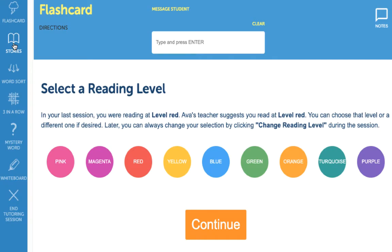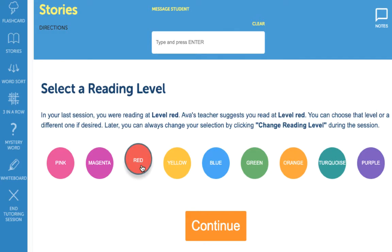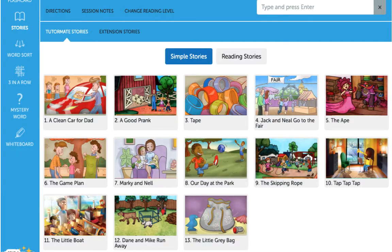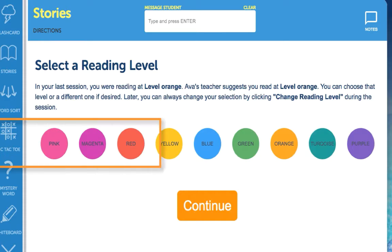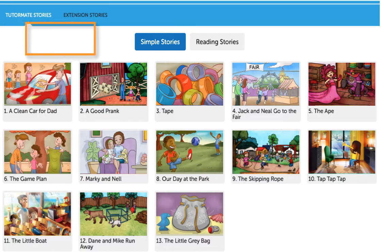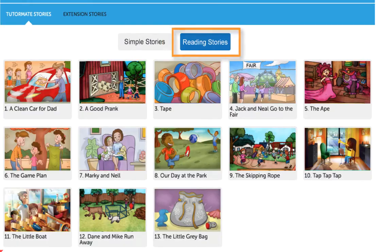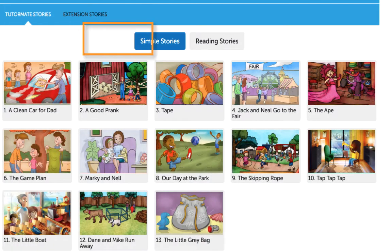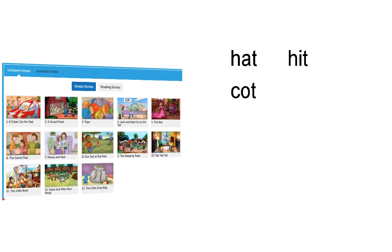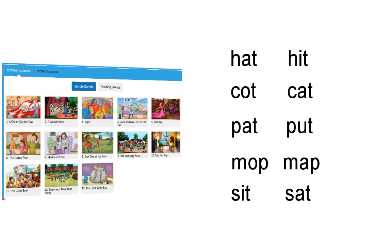When you're ready to read stories, click on the story icon from the activity menu, select the appropriate reading level and click continue to open the story library. A library of leveled books will be displayed in the TutorMate stories tab. Depending on what level your student is reading at, there are three types of stories to choose from: simple stories, reading stories and extension stories. Simple stories appear at the lower reading levels and contain short words that the child should know at this reading level using phonic patterns that they've already been taught like hat and pat.